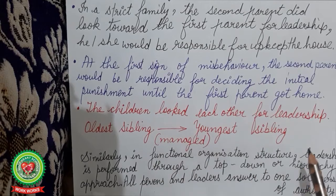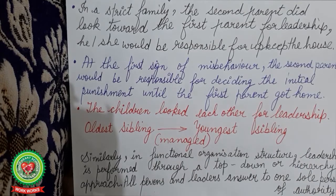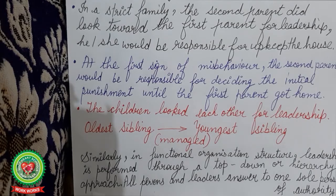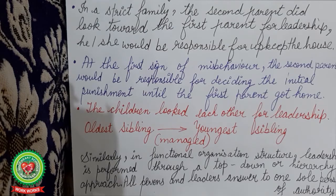Just as the oldest sibling manages the younger ones, similarly in a functional organization leadership is performed through a top-down or hierarchical approach. All persons and leaders answer to one sole person of authority. In functional organizations, the group is like a strict family in which one person is the sole breadwinner. In a company, the authority is the chairman, president, or director — all managers, deputy managers, and functional heads have to answer to that person. There is a top-down hierarchy: CEO, then directors, then managers at different departments, then workers.